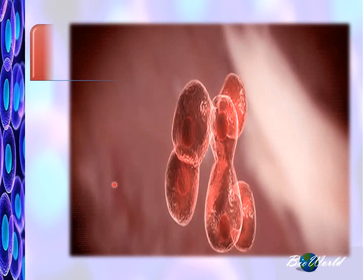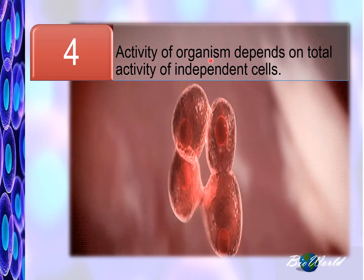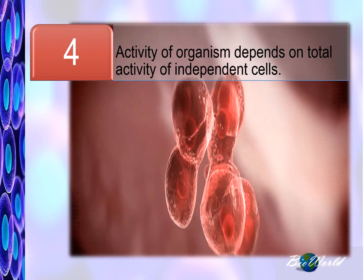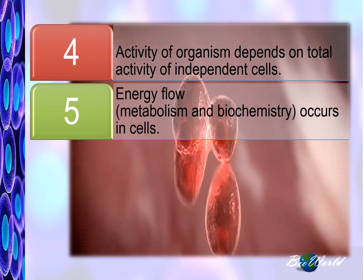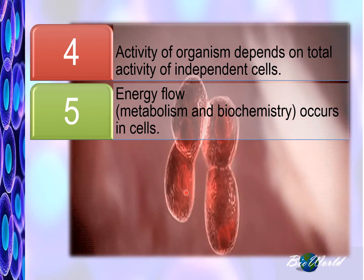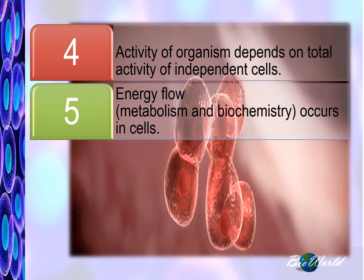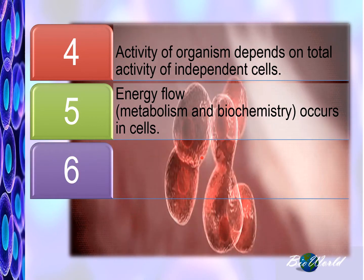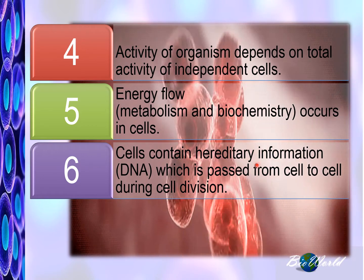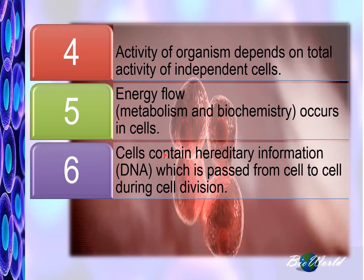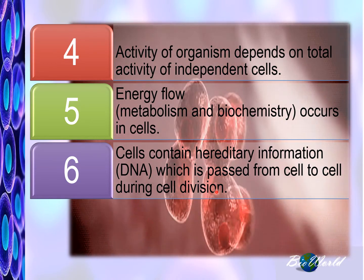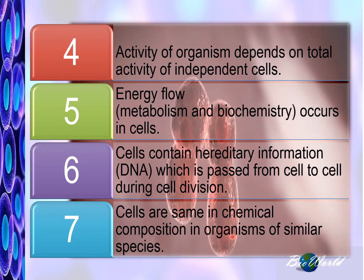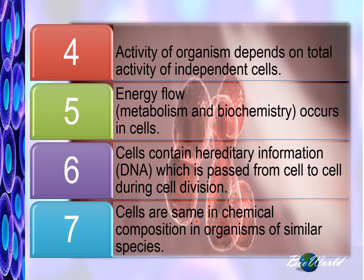The fourth part states that the activities of an organism depend on the total activity of all the cells inside it. The fifth part states that energy flowing within the cells comes from the process of metabolism and biochemical reactions happening in each cell. The sixth part identifies that there is hereditary material in the form of DNA in cells, and that this DNA can be passed from cell to cell during mitosis or meiosis. The final part states that cells from organisms of similar species will have the same chemical composition.